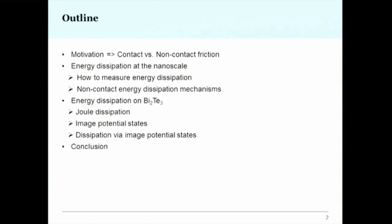Contact friction is an area of mesoscale physics that deals with macroscopic objects. When we come to non-contact friction, we are mostly dealing with energy dissipation and dissipative processes — how energy is transferred from one moving object to another — and they don't necessarily have to be in contact.